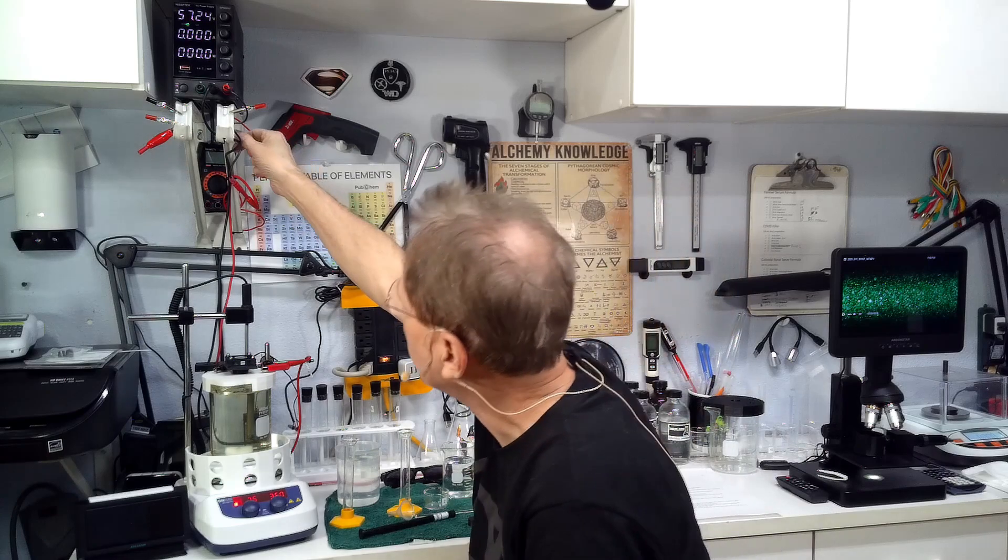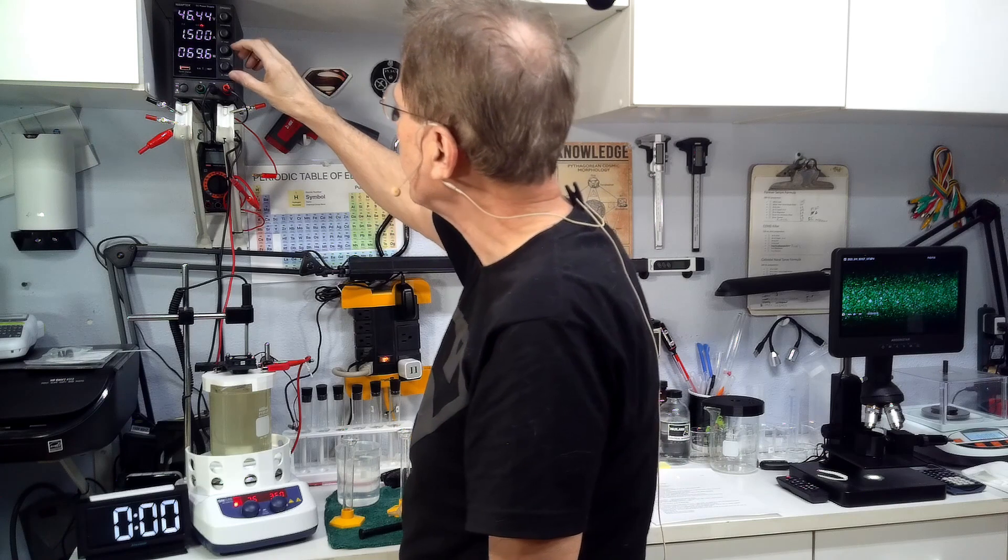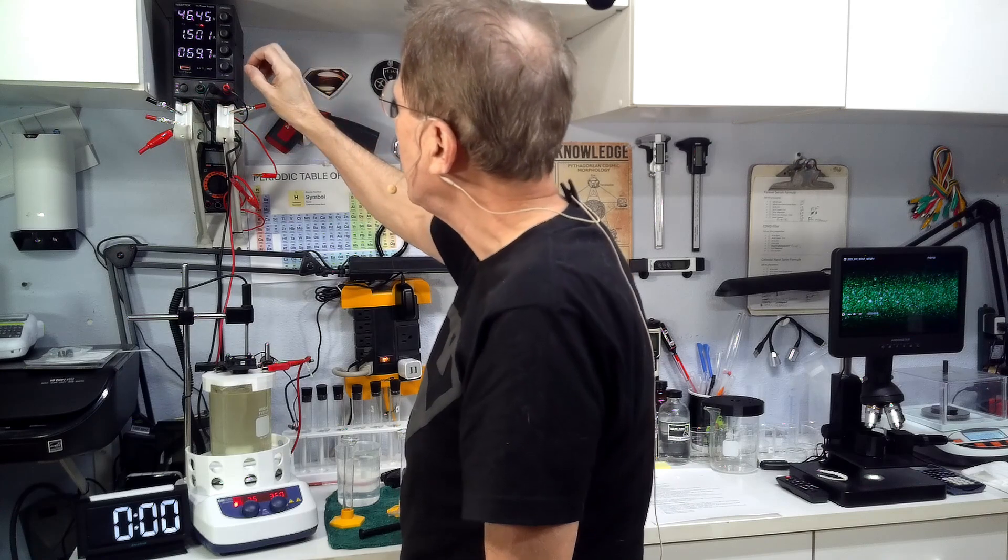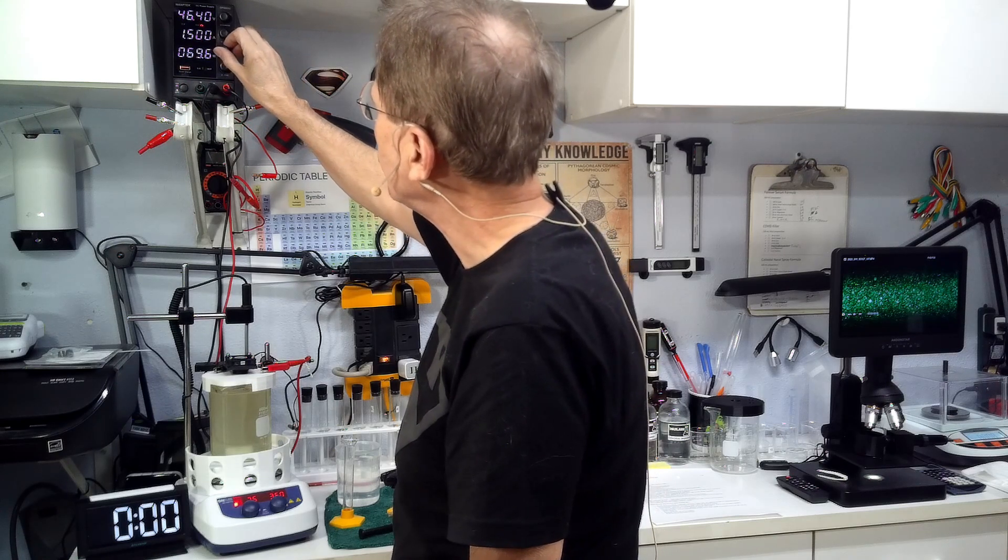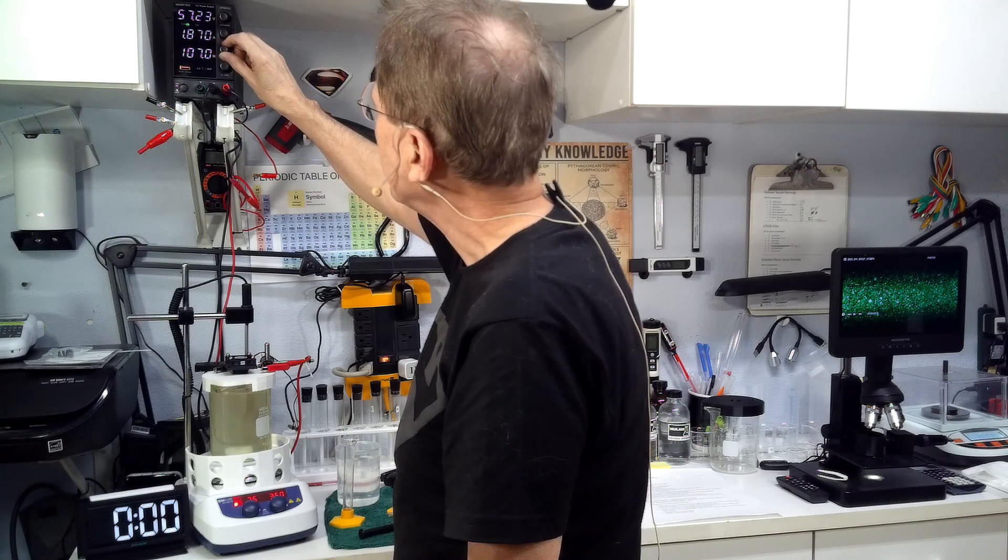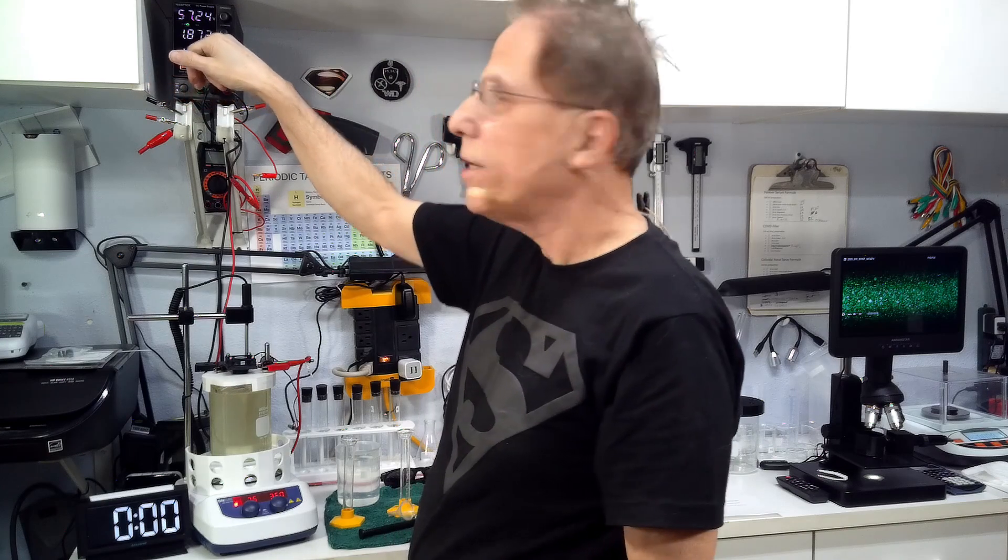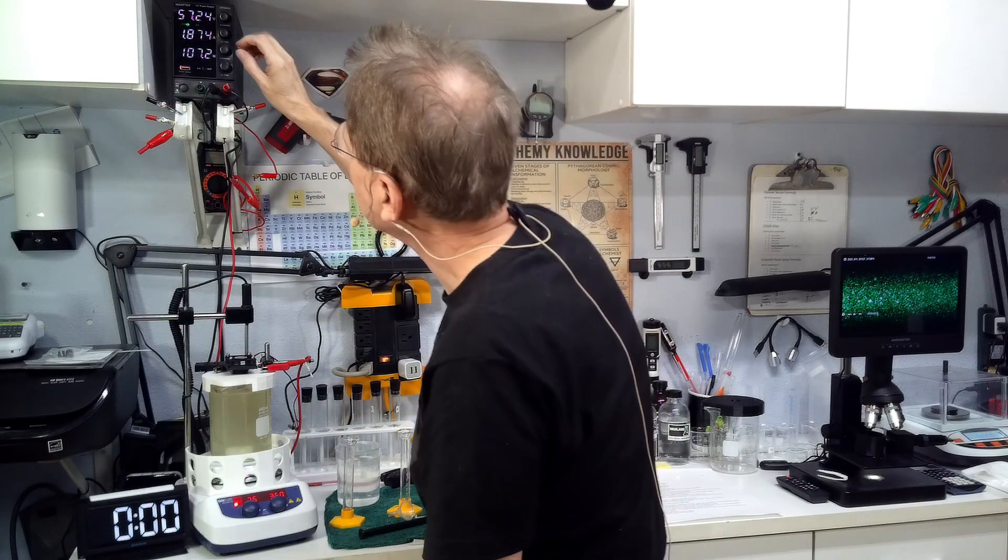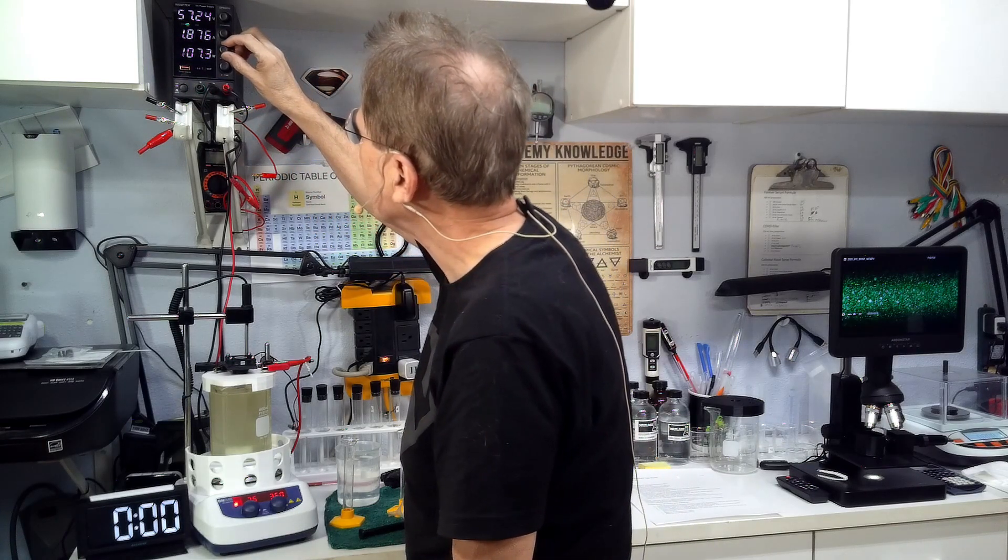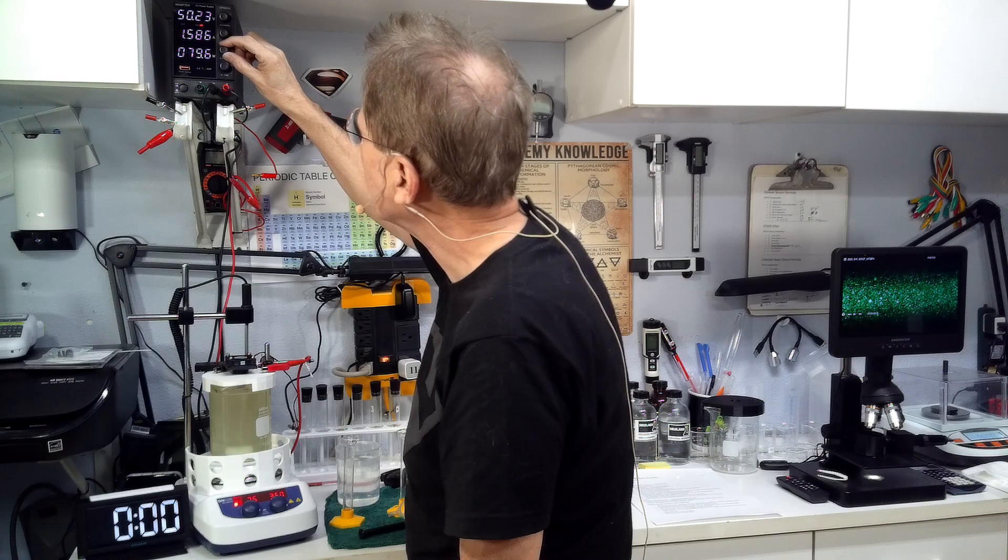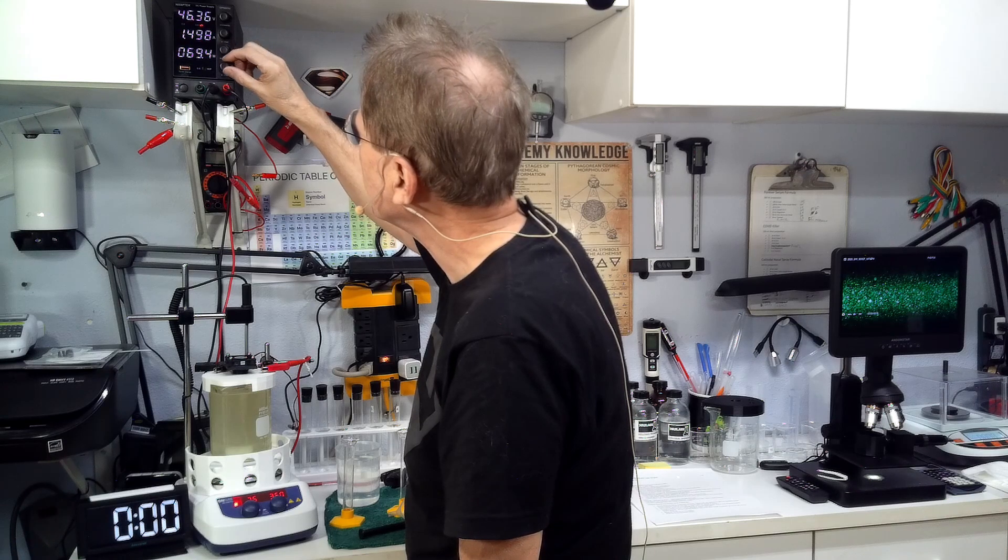We're going to turn this on now. I've already current locked this thing at 1500 milliamps as you see here. If I was to unhook this, the current would shoot up to about 1800 milliamps at 57 volts. Now that's too high because that will create too much platinum dioxide. So I like to current lock this down.